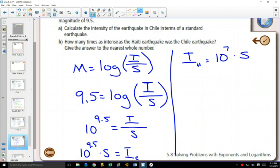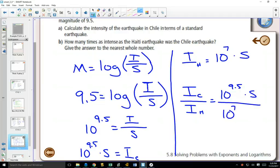If we wanted to compare those two, how much more intense was one than the other? Take the intensity of Chile and divide it by the intensity of Haiti. You get (10^9.5 × S)/(10^7 × S). What happens to those S's? They cancel out. What exponent law do you have when you divide? You subtract.